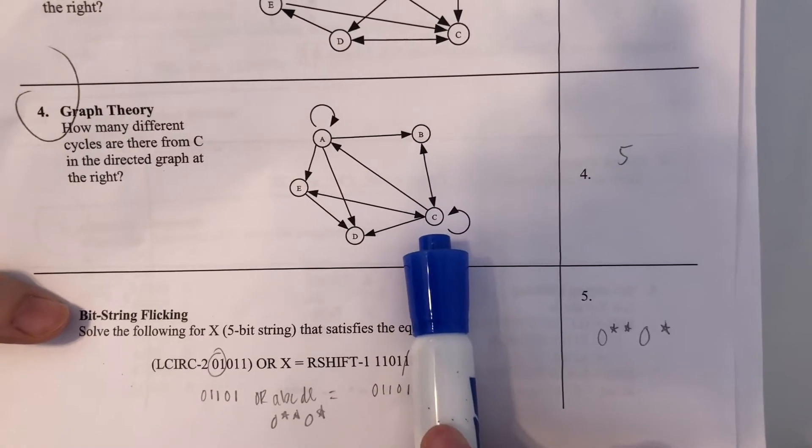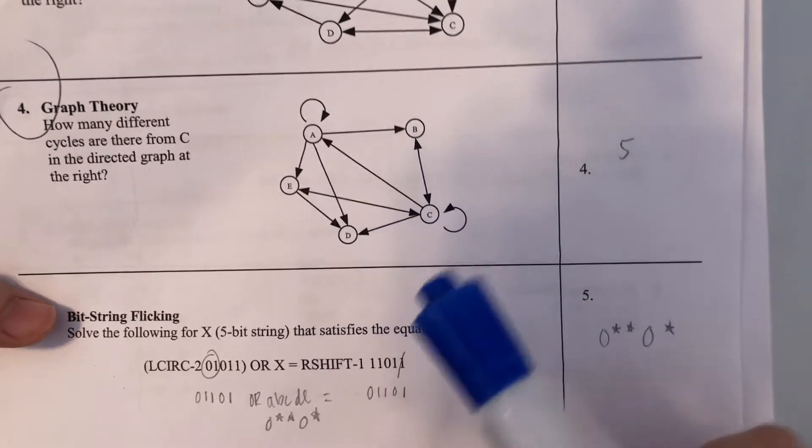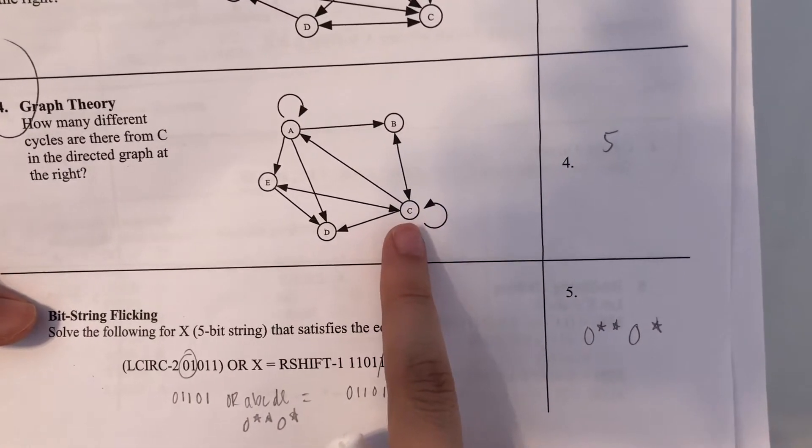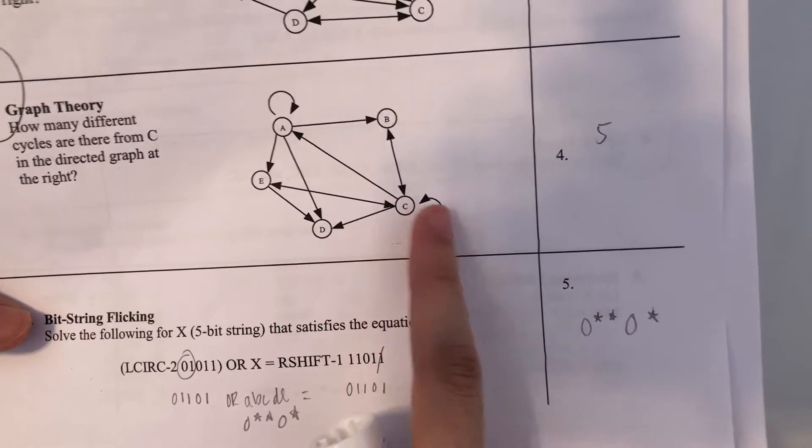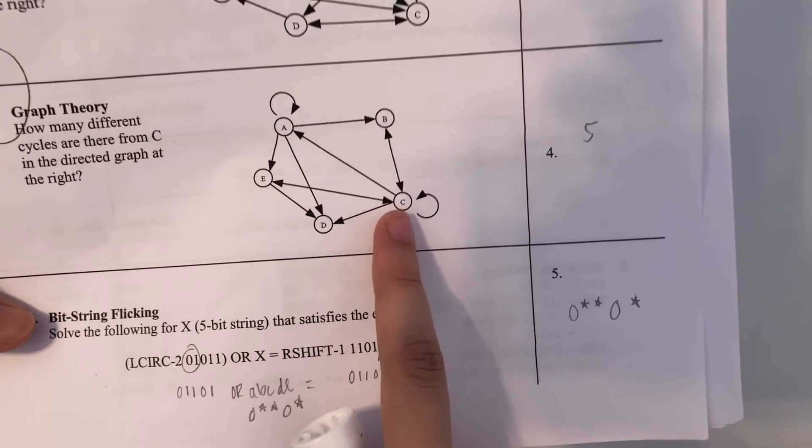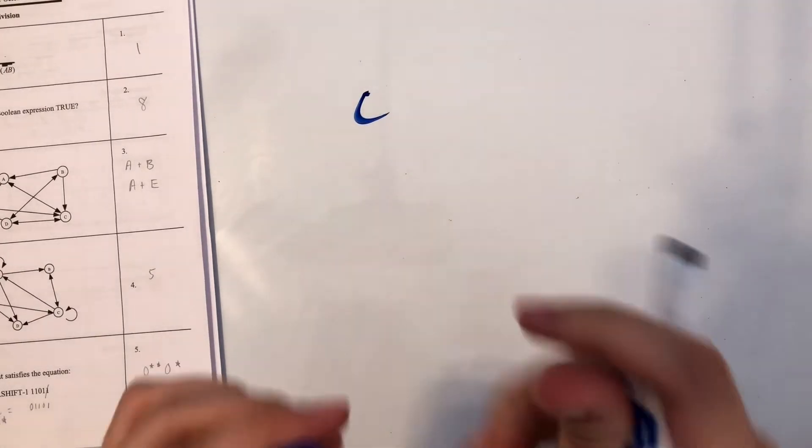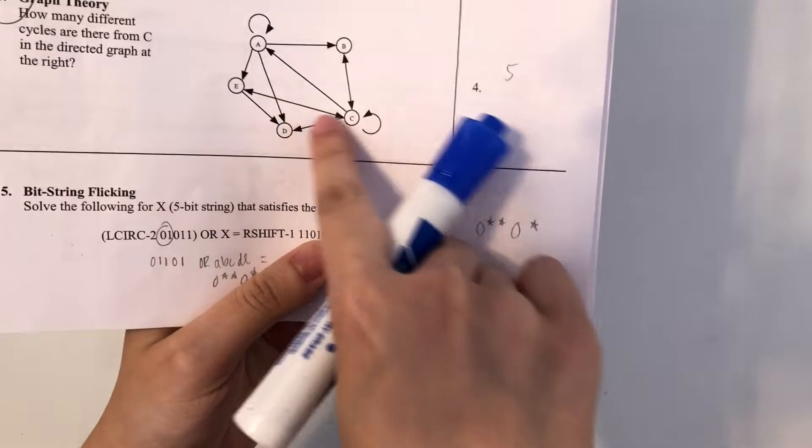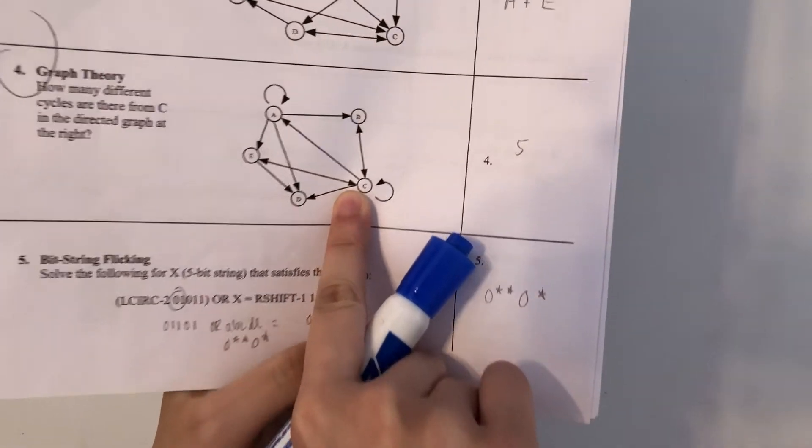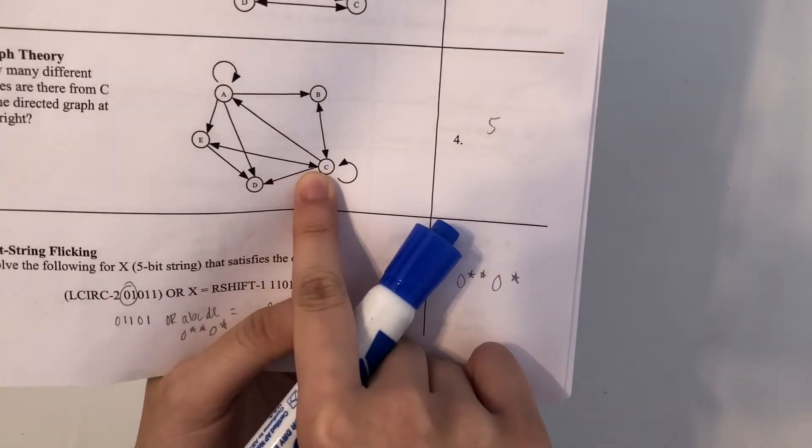Since it doesn't specify the path length, we can literally have a path length of zero. So we can just be from C to C, and that would count as a valid path. We're going to start from C and walk through each of the available steps in this graph and see whether that leads us back to C or not.